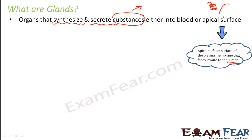Let us suppose this is a cell. Inside the cell you have various organelles, cytoplasm, etc. This is the plasma membrane. There are some glands which secrete their substances on the inner surface of this plasma membrane. Once secreted on this surface, it will reach the different cell organelles inside the cell. So these are the two ways — or two places — where glands secrete their chemicals.